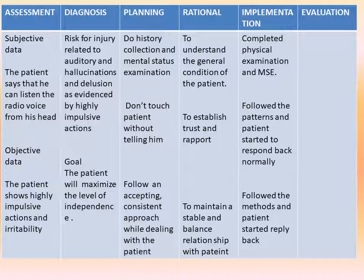The second planning step is: do not touch the patient without telling them first. Because of hallucinations and hallucinatory behavior, if you touch without warning they will get scared, irritated, and may do something beyond your control. The rationale is to establish trust and rapport — without permission, you cannot develop trust. The third planning step is to follow an accepting, consistent approach when dealing with the patient. A consistent approach is very important to maintain a stable and balanced relationship with the patient. Write what method you followed in the implementation column.